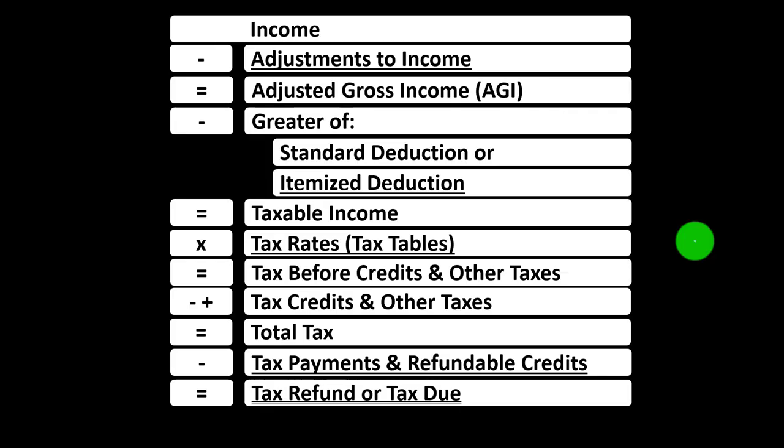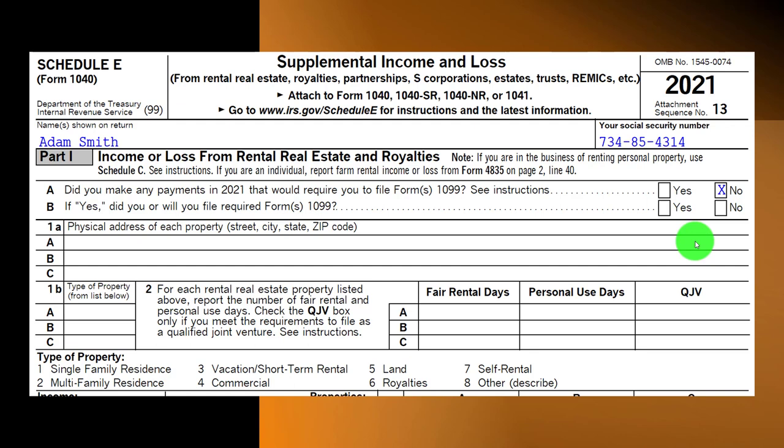The income tax formula focuses on line one income. We would have a sub-schedule — basically an income statement with income and expenses. Expenses are essentially deductions that net into line one income of the income tax formula, as well as eventually page one of Form 1040. This is Schedule E, the supplemental income and loss schedule, focused on rental real estate.